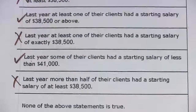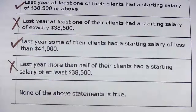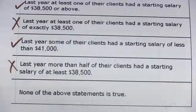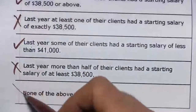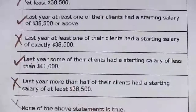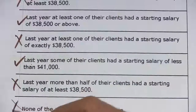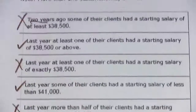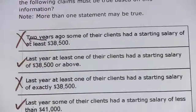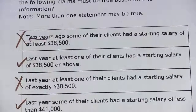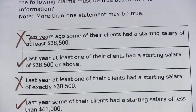Finally, the last claim says: none of the above statements is true. We found two of them that were true, so this one cannot be true. That is a little bit of work with claims based on averages.